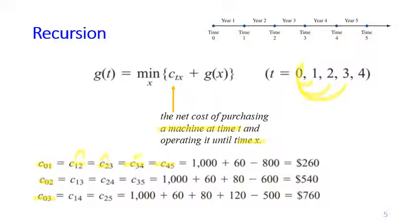For example, c(0,1) means: purchase the new machine, pay maintenance during its first year of operation, and then sell the machine — receiving the salvage value from a one-year-old machine. The two-year costs mean: buy a new machine, pay maintenance, then sell after two years. The three-year row means: buy a new machine, pay maintenance during the first, second, and third years, and finally sell the three-year-old machine.